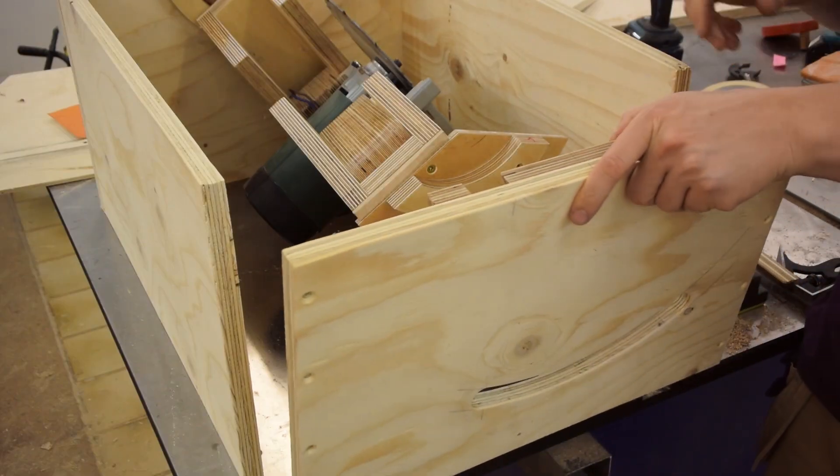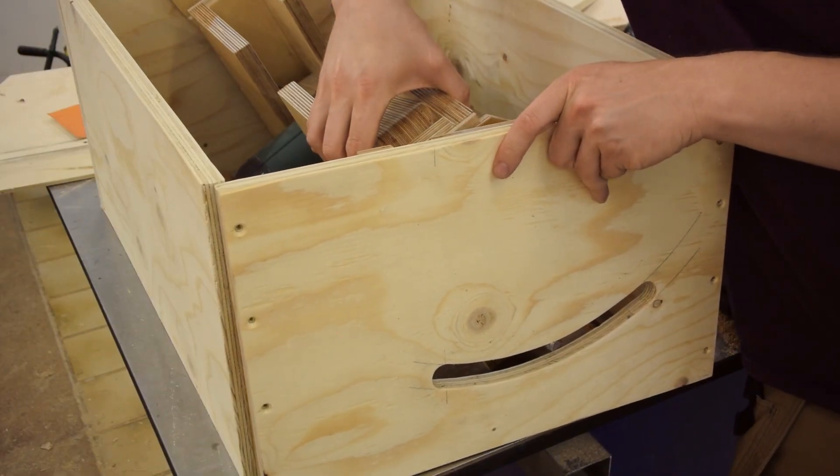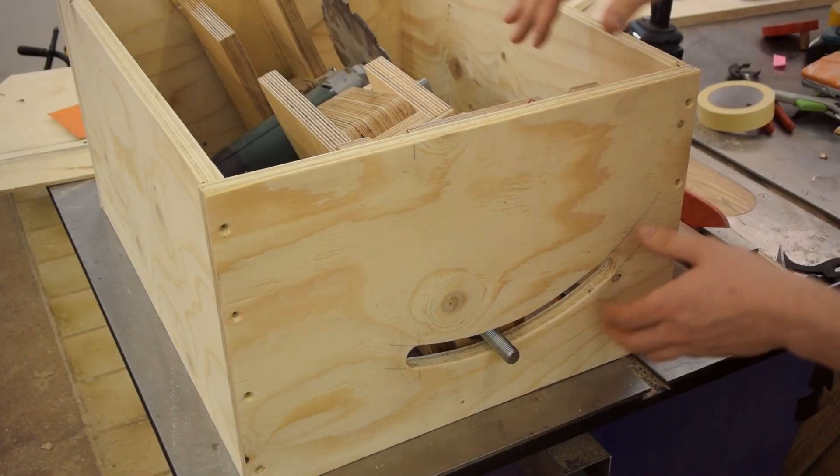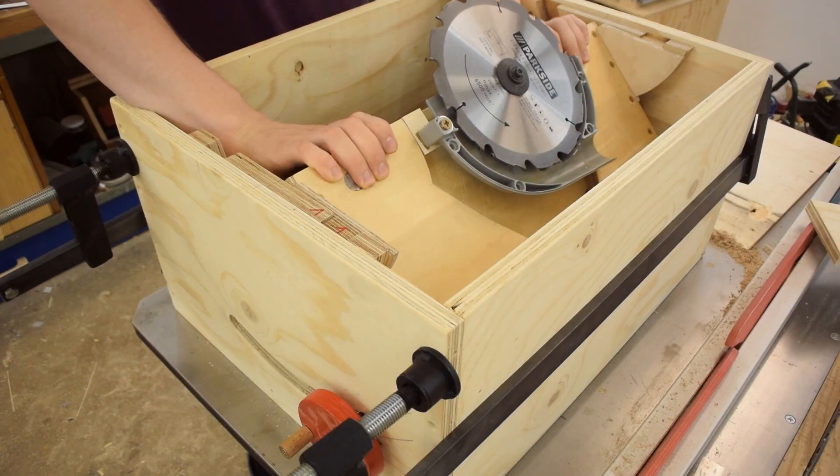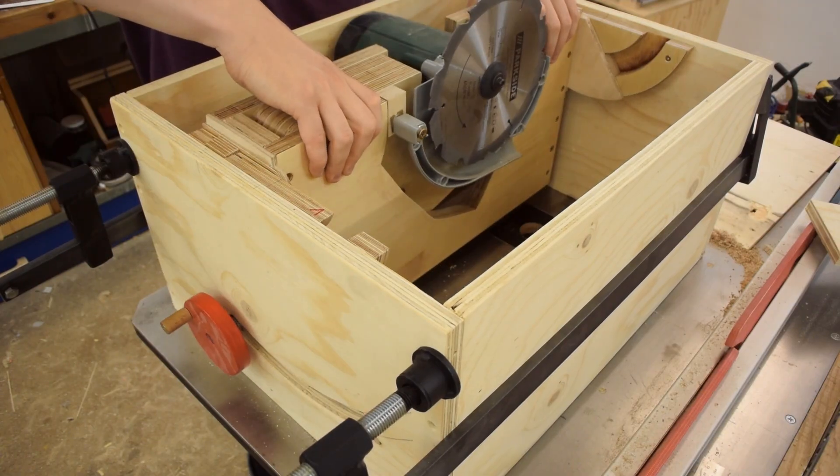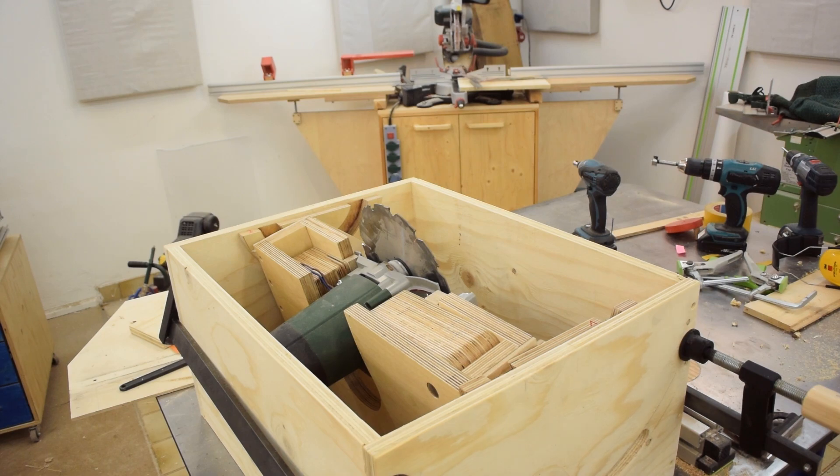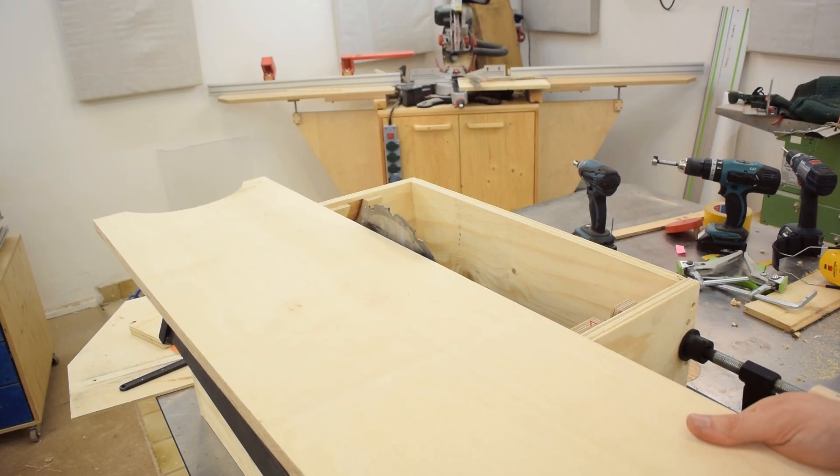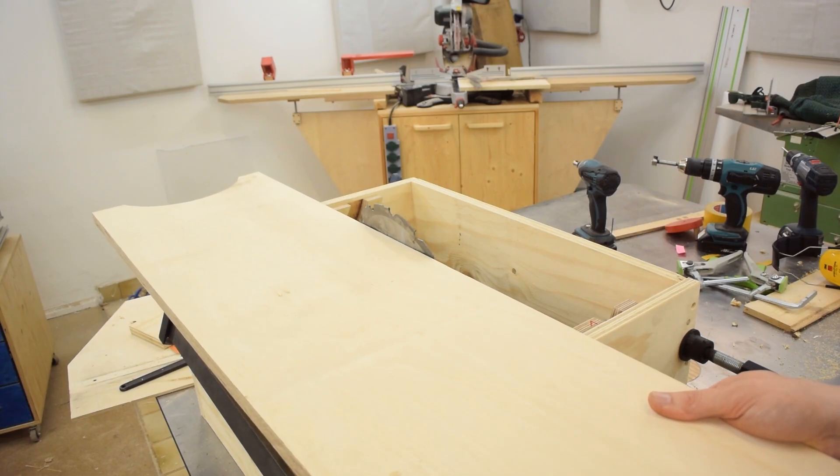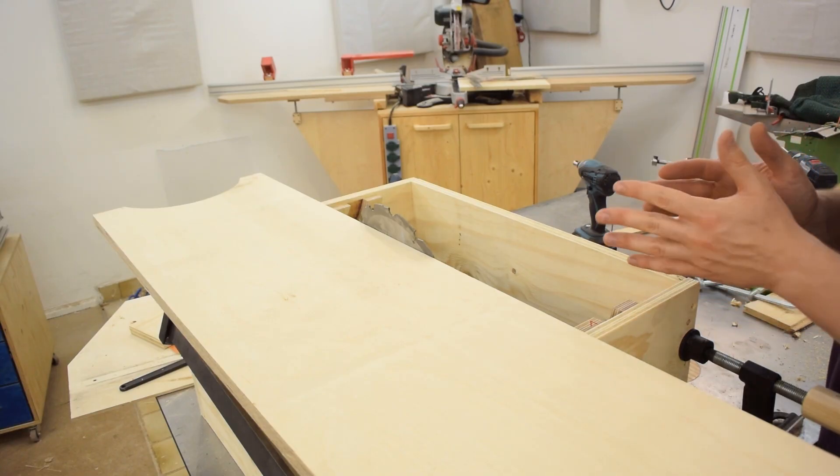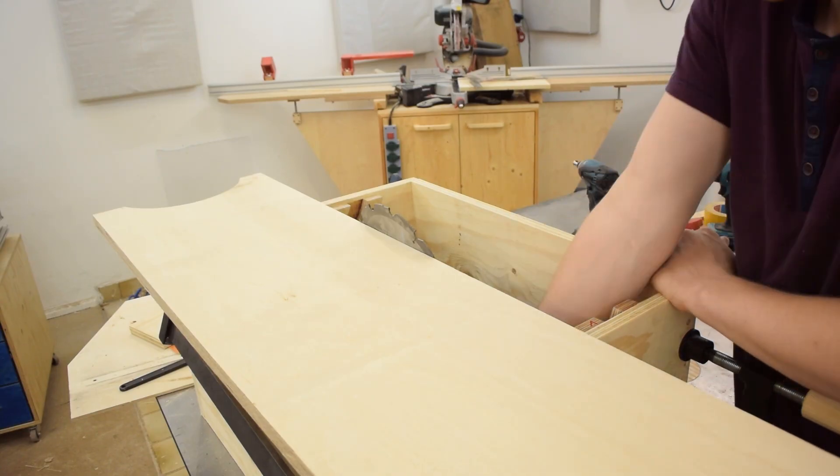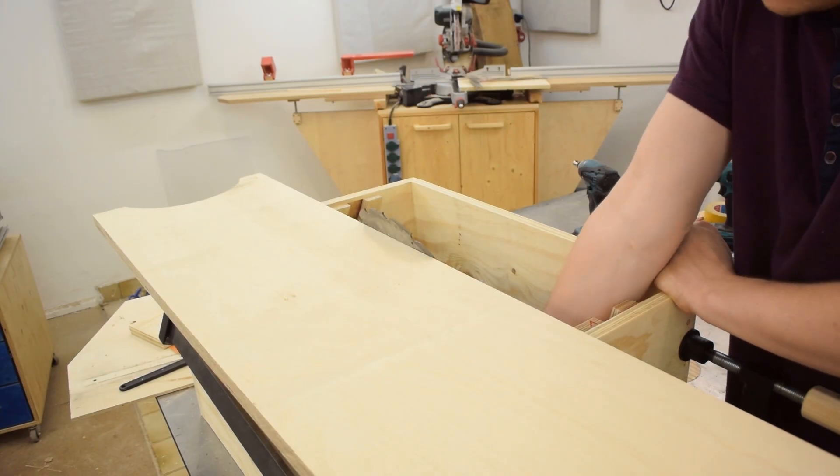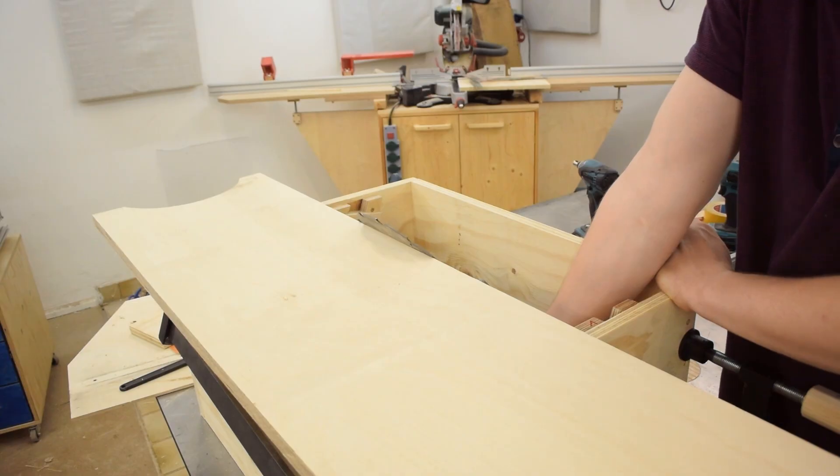There we go. It already looks like these trunnions are working, but now comes the real test. This piece of plywood has the exact same thickness as the later tabletop and I'm just gonna line it up with that blade. Alright, now everyone brace yourselves! Okay that looks pretty much perfect!